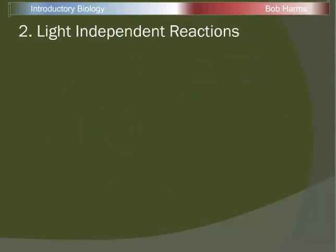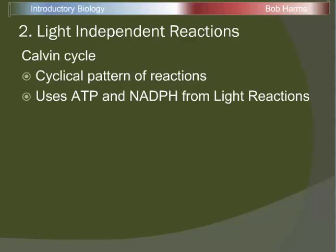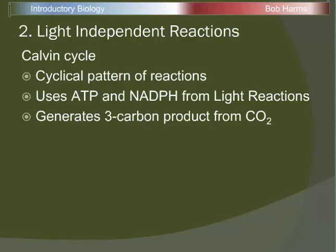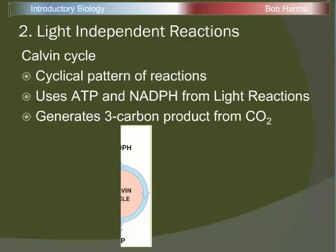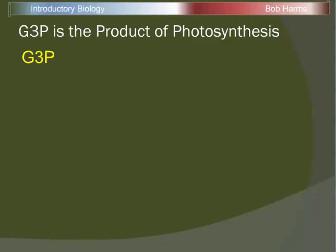The next series of reactions in photosynthesis are the light-independent reactions. The major part of this is a cyclical pattern of reactions referred to as the Calvin cycle or the C3 cycle. It's called a cycle because many of the chemicals are recycled or reused over and over. The energy for the light-independent reactions comes from that short-term energy — the ATP and NADPH derived in the light reactions. In this set of reactions, carbon dioxide from the air is cooked together to form three-carbon products called G3P. The G3P is a stable form of energy that the cell can utilize for many different functions.